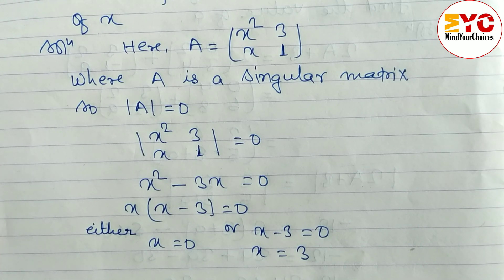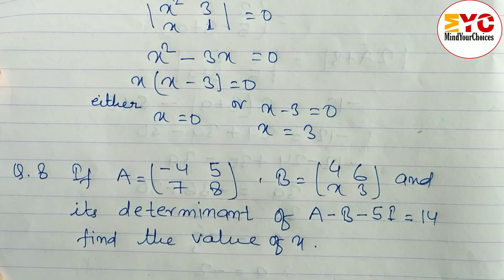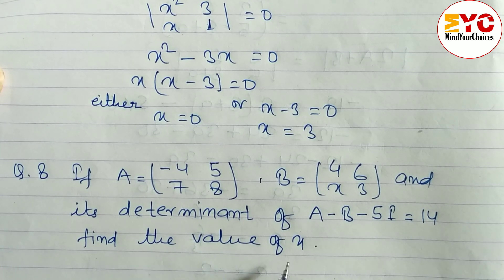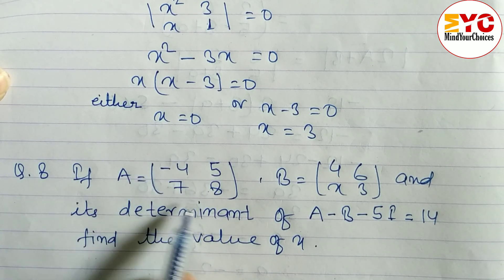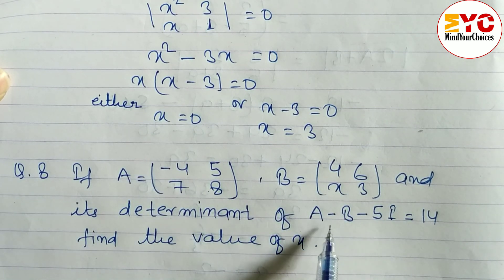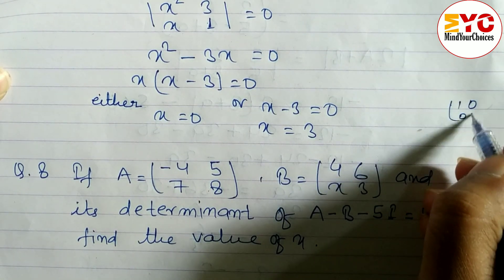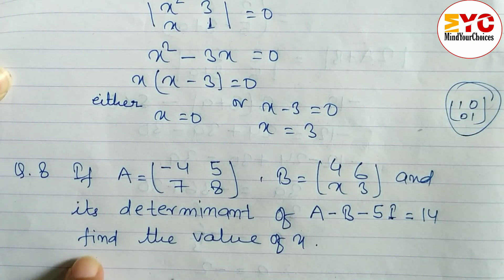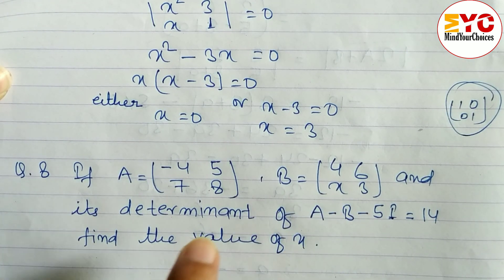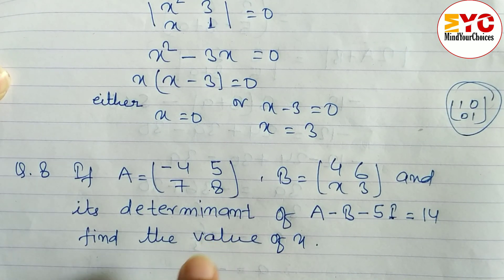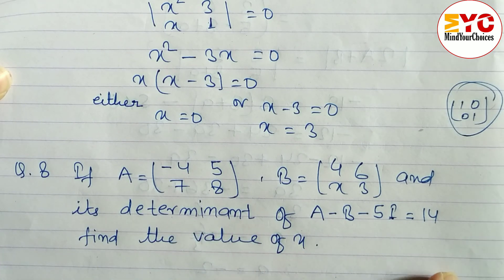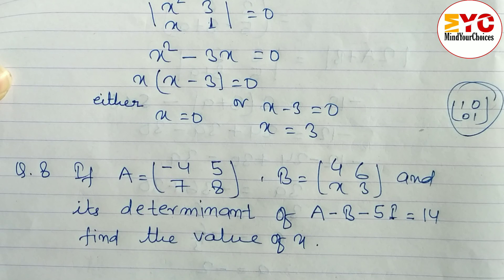Now look at the next question, which is homework for you. You have to comment the value of x. If A equals this matrix, B equals this, and determinant of (A - B - 5I), where I means the identity matrix [1 0; 0 1], equals 14, find the value of x. This question is related with question number 6, same type of question. You have to do this and comment your answer.